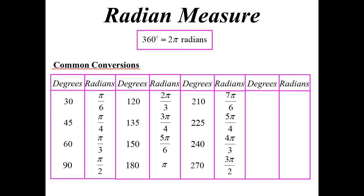Third quadrant, 210, 7 pi on 6, 225, 5 pi on 4, 240, 4 pi on 3, 270, 3 pi on 2. And that gets us to our fourth quadrant.